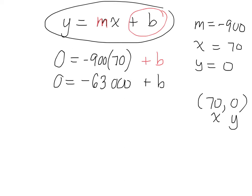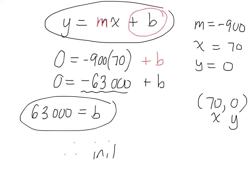Now, I want to isolate b. What's the opposite of negative 63,000 becomes? So, therefore, the initial amount is equal to how much? 63,000. Oh, it's sorry. Liters. 63,000 liters. Let's go back and look at our graph.